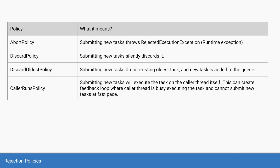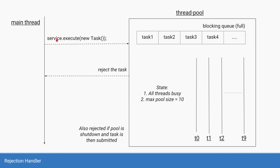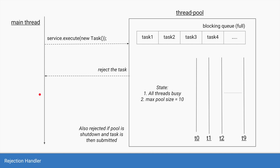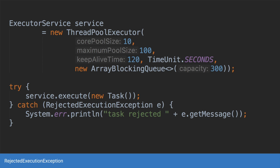The last policy is caller runs, which takes the rejected task and asks the caller itself to execute it. So if the main thread is submitting task number 111 and the thread pool rejects it, the thread pool will ask the main thread itself to run that 111th task. This creates a feedback loop where the main thread has no option but to run it and cannot submit the 112th task — it acts as a mechanism to slow down the main thread and reduce the rate of new task submissions.